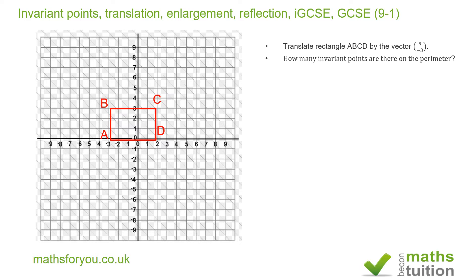After translation, we end up with the image of ABCD shown in blue. Clearly, A, B, C, and D have all moved to new positions after translation. So in effect, all the points have moved and none has got the same coordinate. In this instance, the number of invariant points is 0.